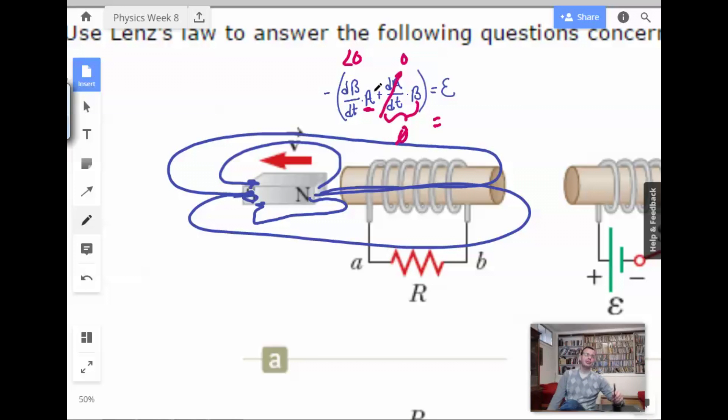But it might make a great science fiction novel. Hmm? All right. So we have a number that's less than zero. Because the change, since B is getting weaker, the change in B over time is going to be negative. We have a negative number times a negative number, which is going to be a positive number. Positive number.